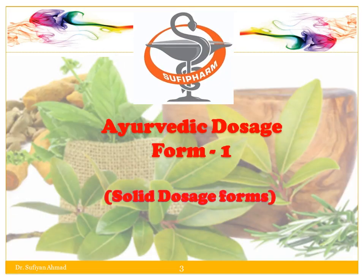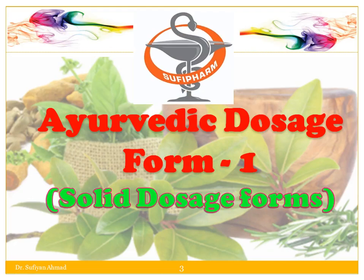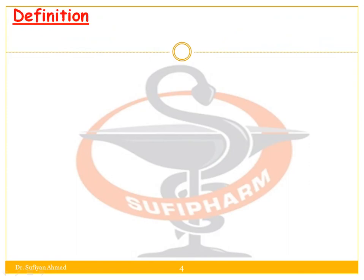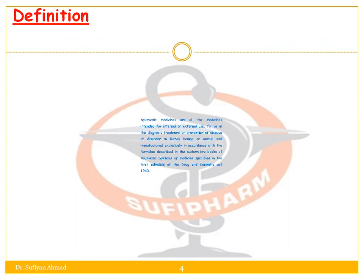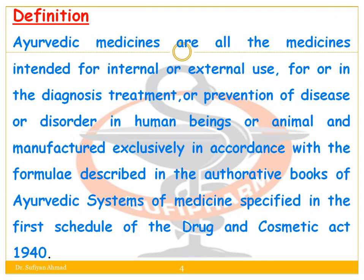First of all, we'll see what is the Ayurvedic dosage form. It can be defined as: Ayurvedic medicines are all medicines intended for internal or external use for the diagnosis, treatment, or prevention of disease or disorder in human beings or animals, and manufactured exclusively in accordance with the formula described in authoritative books of the Ayurvedic system of medicine as specified in the first schedule of the Drugs and Cosmetics Act 1940.